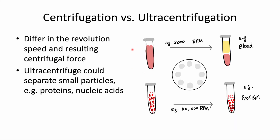In a typical centrifugation experiment, for example when you are fractionating blood, the sample is typically spun at a revolution speed of 2000 rpm. However, in ultracentrifugation, the particles or the samples are being spun at a much higher speed, for example 60,000 rpm, and this incredible speed actually generates an enormous amount of centrifugal force — hundreds or thousands times the forces of gravity on Earth.